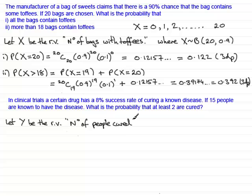So we've defined that and we now need to say where Y is distributed binomially. Two parameters, number of trials first which is 15 and the probability of success. Next which is 8% or 0.08. So in this particular question, we're asked that the probability that at least two are cured. So that's the probability that Y is greater than or equal to 2.